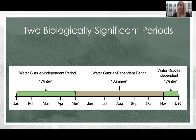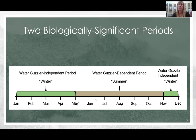In the Mojave Desert, since it gets so hot and dry during the summer, bighorn sheep in this area have a unique ecology: they are dependent on point-source water guzzlers that the state of Nevada has set up around Southern Nevada. We have broken up the biological year for sheep into two phases — the summer, when they are dependent on water guzzlers, defined from May to end of October, and the winter season when they are independent of the water guzzlers, from November through the end of April. This varies from year to year depending on conditions, but this is the typical pattern.